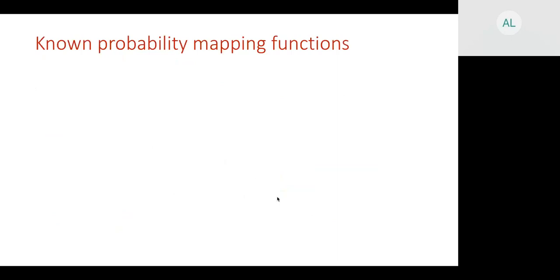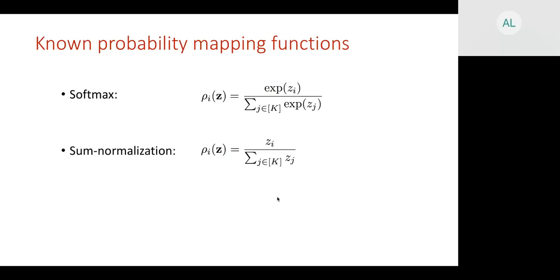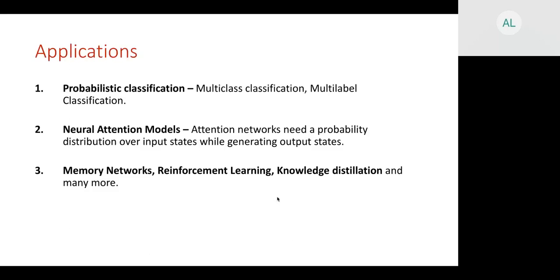There are known probability mapping functions. One very familiar function is softmax, which we use in almost every machine learning setting. There are also other not-so-well-known functions like sum normalization and spherical softmax. Softmax is used in probabilistic classification — both multi-class and multi-label — neural attention models, memory networks, reinforcement learning, knowledge distillation, and many other applications.